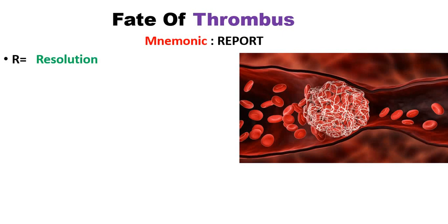Next is E, E for emboli formation. After the resolution, the thrombus next is P, P for the propagation of the thrombus or the emboli occurs.